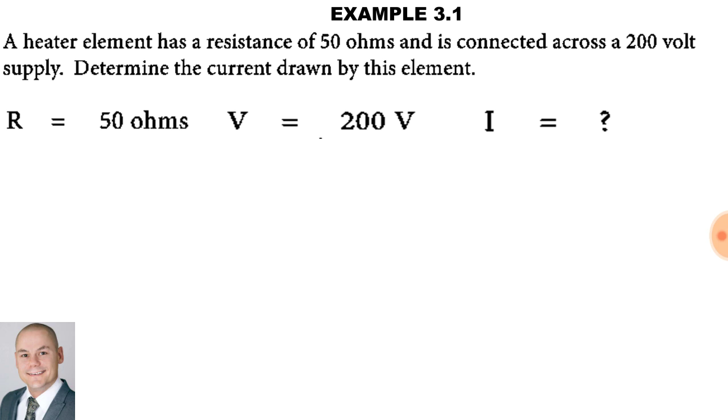According to Ohm's law, current is directly proportional to voltage and inversely proportional to resistance. The voltage is 200 and the resistance is 50 ohms. Therefore, the current flowing is 4 amps.